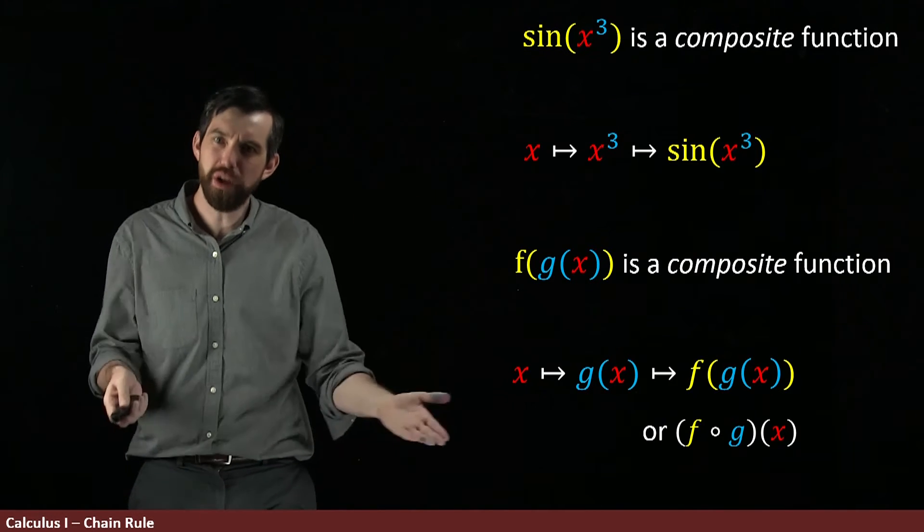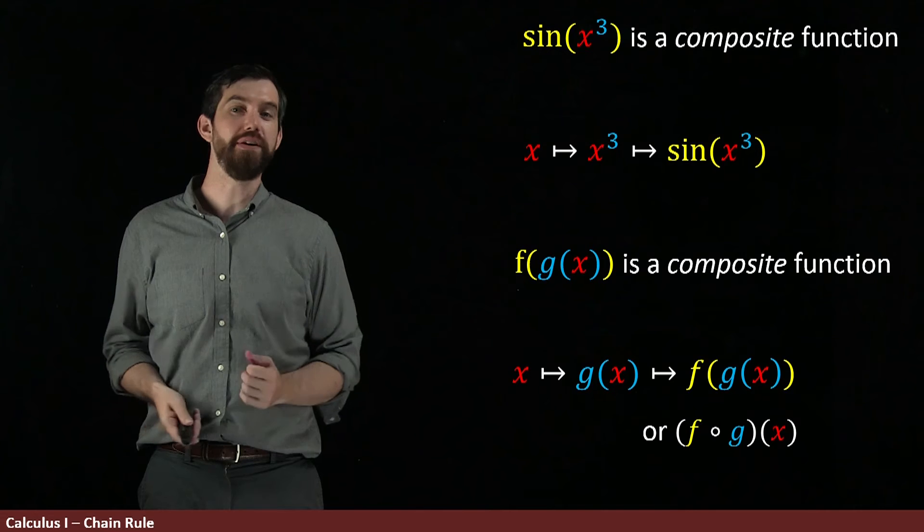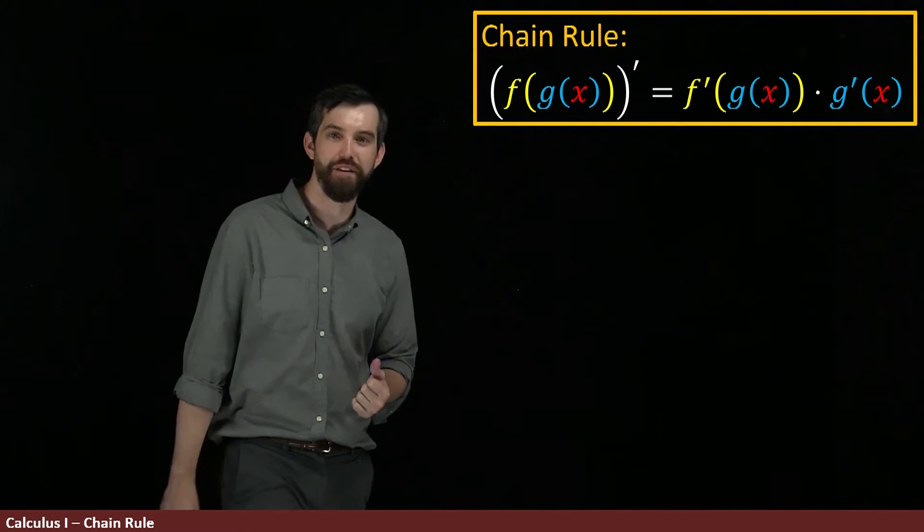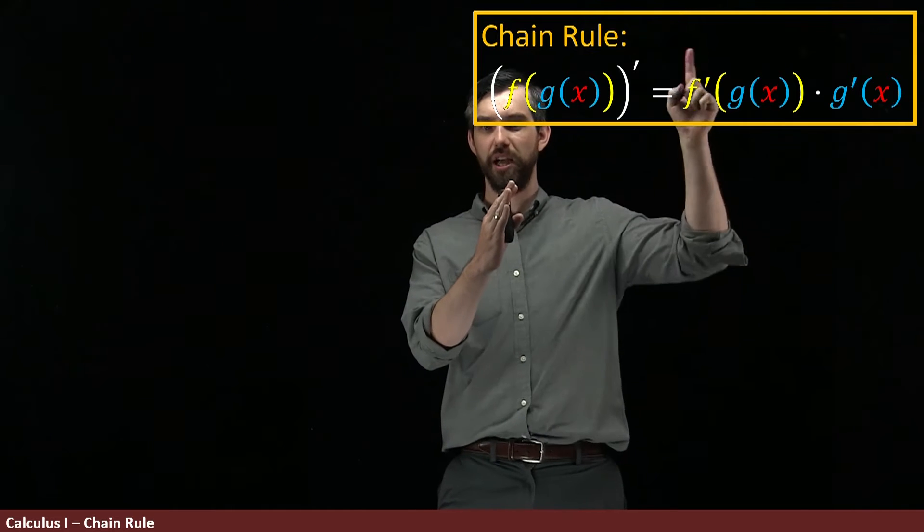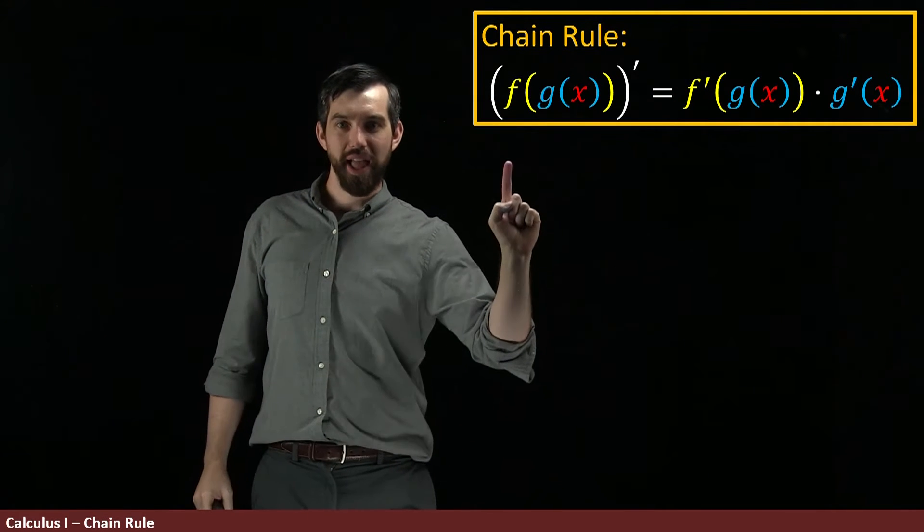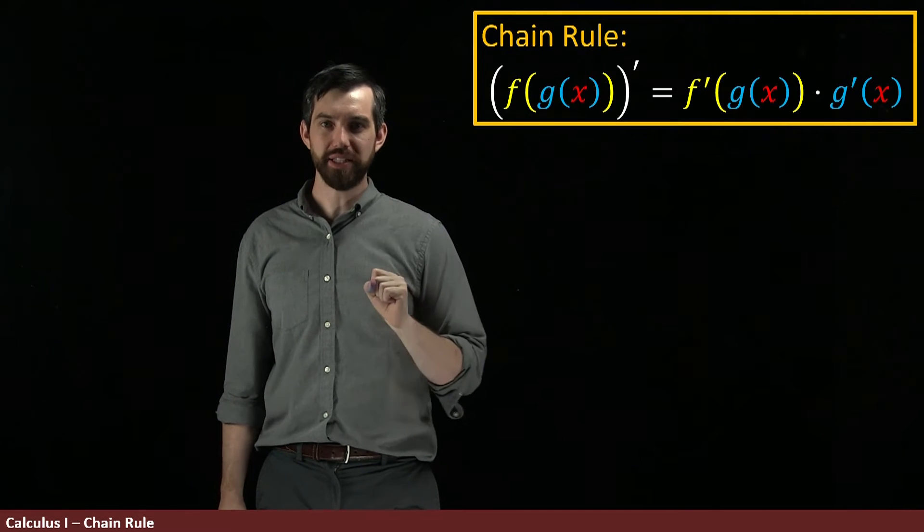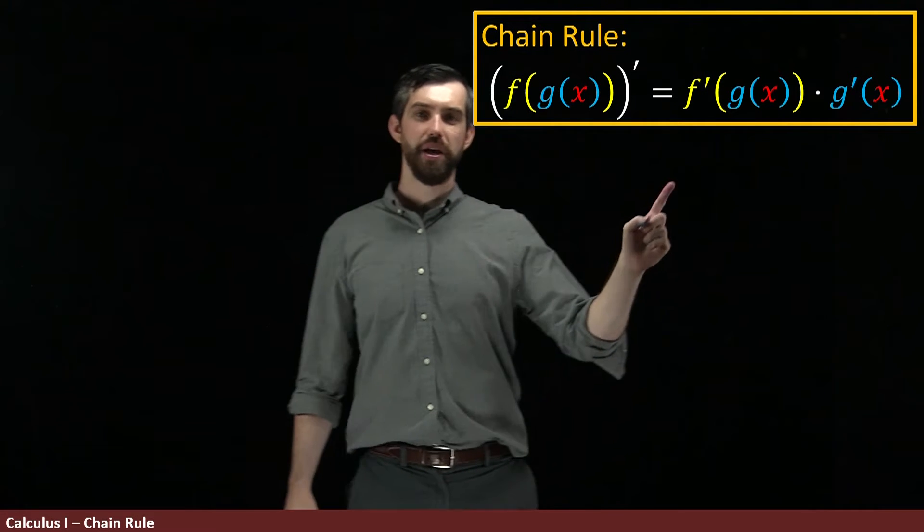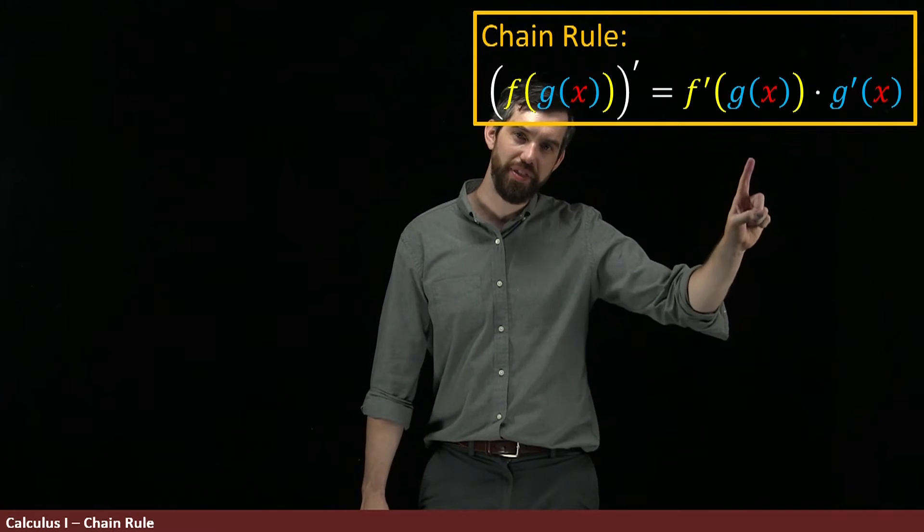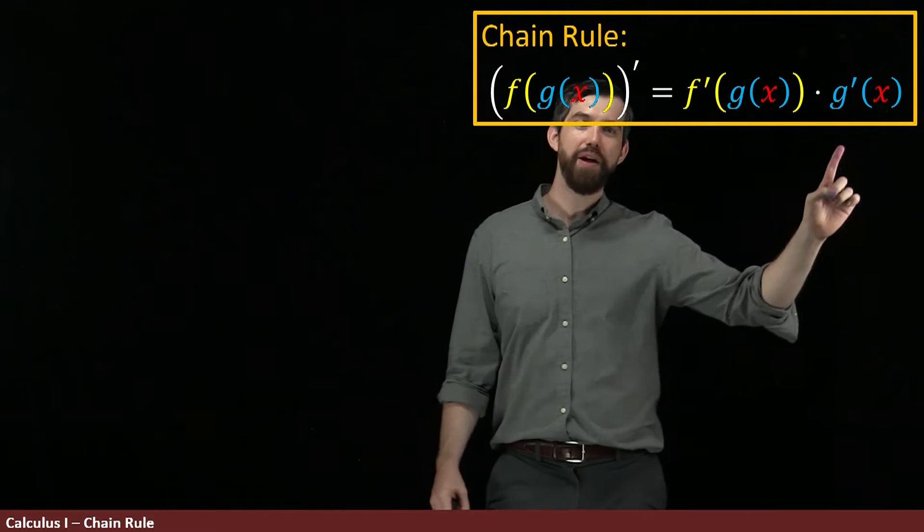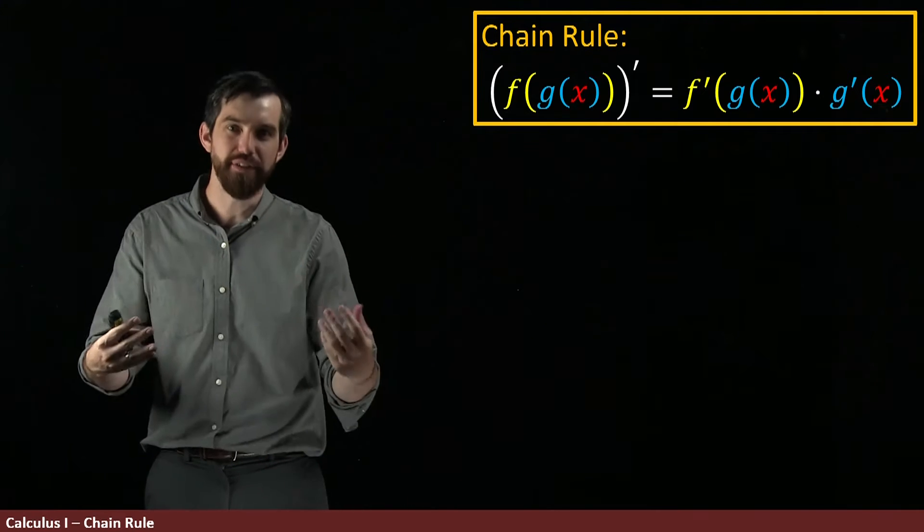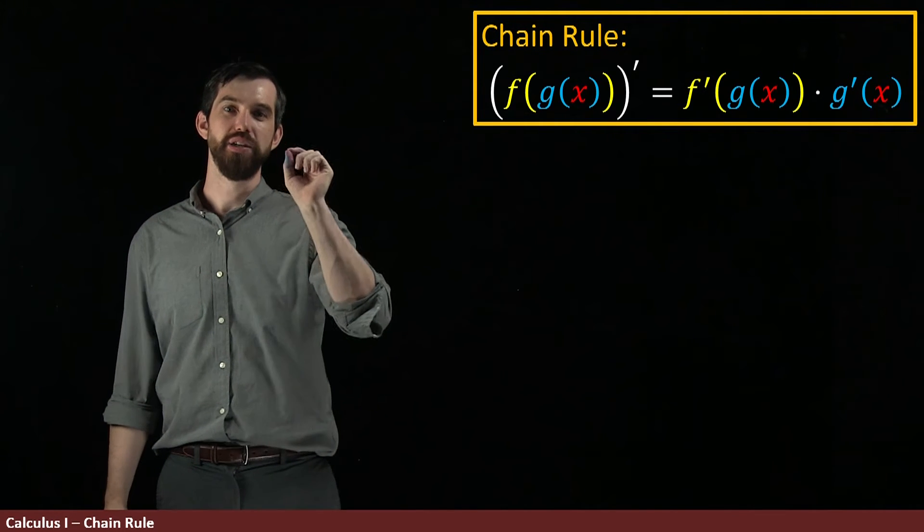So how do we take the derivative of a composite function? The formula is something referred to as the chain rule. It's going to look a little bit messy. If I'm going to take the derivative, so notice I use the prime here and put everything in brackets, the derivative of f composed g of x. Well, what it is is the derivative of the outside evaluated at the inside multiplied by the derivative of the inside: f prime of g of x times g prime of x.